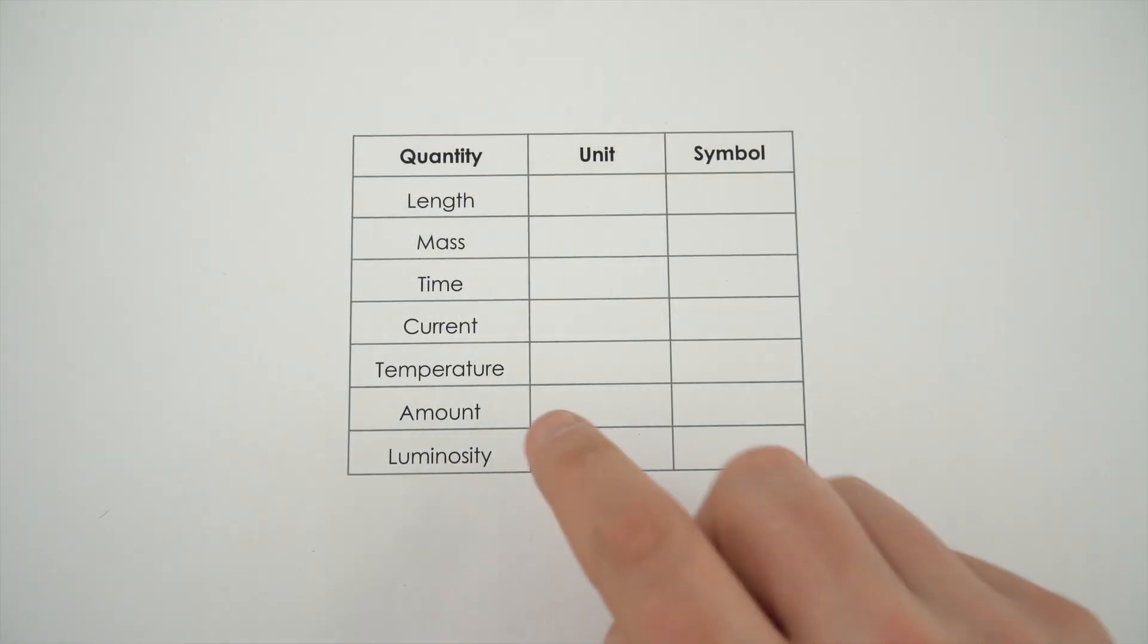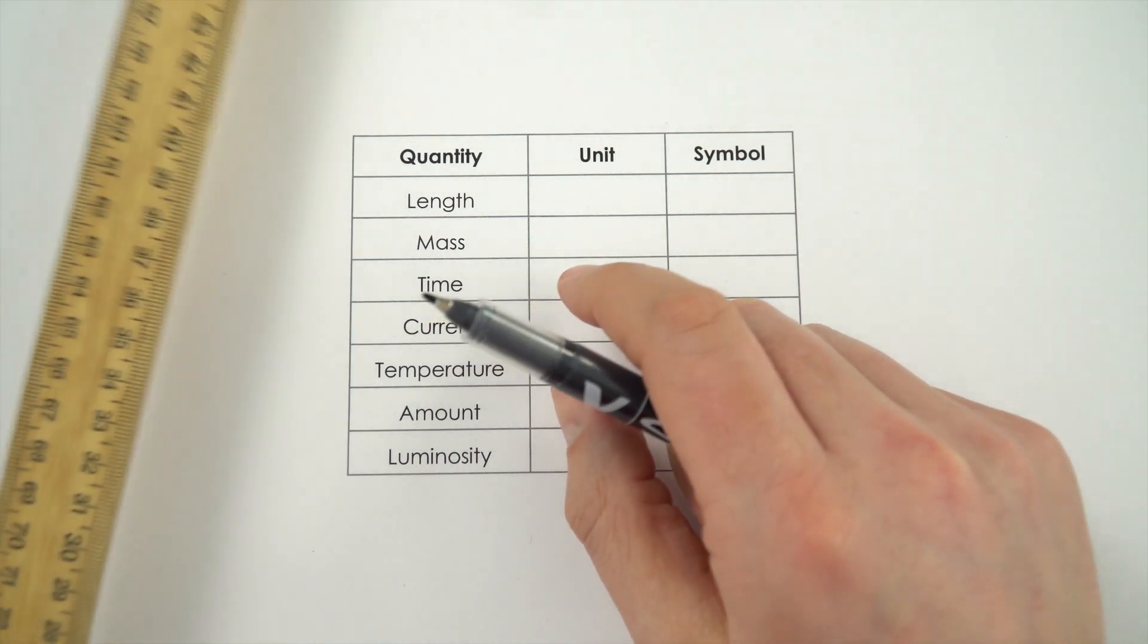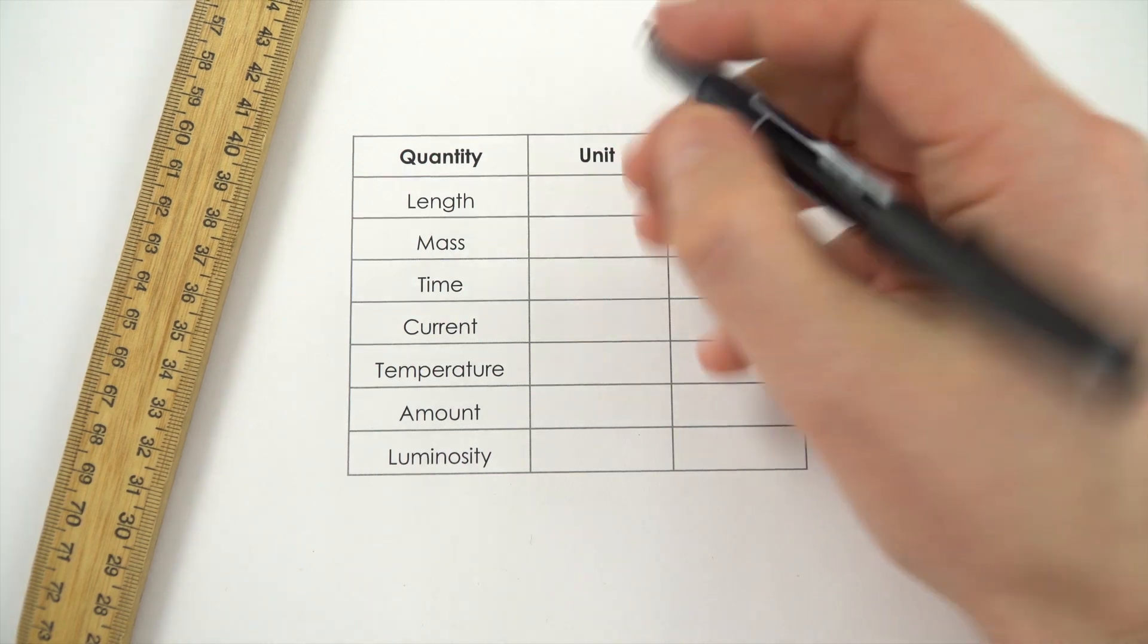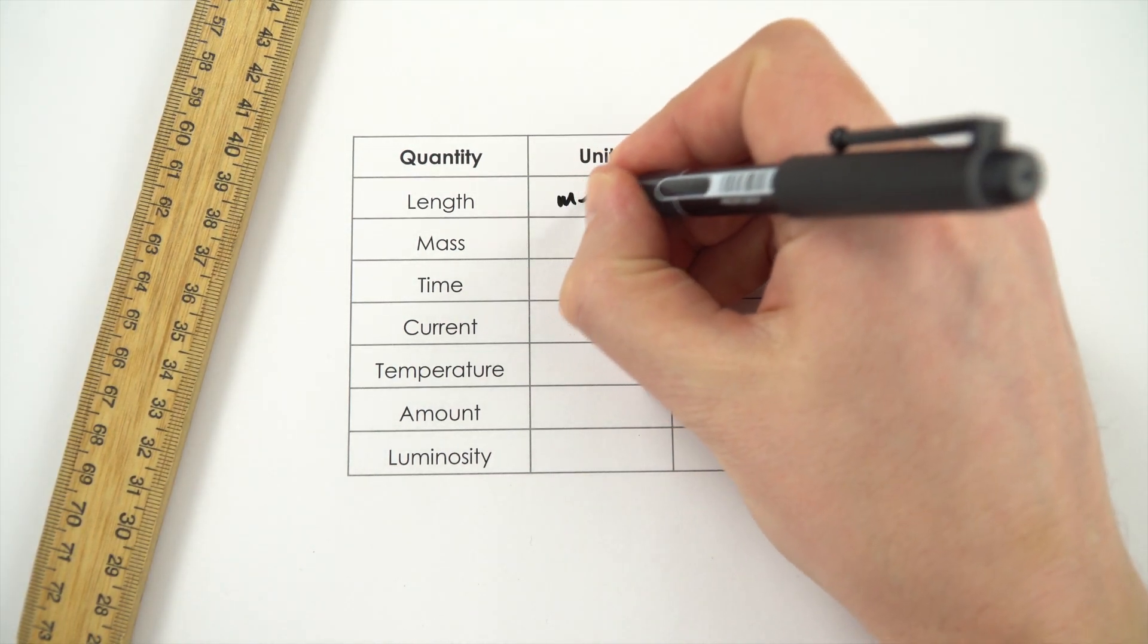Now in physics there are seven base units as we call them. So the first one is length and this is how long things are and we always measure this in the metre.